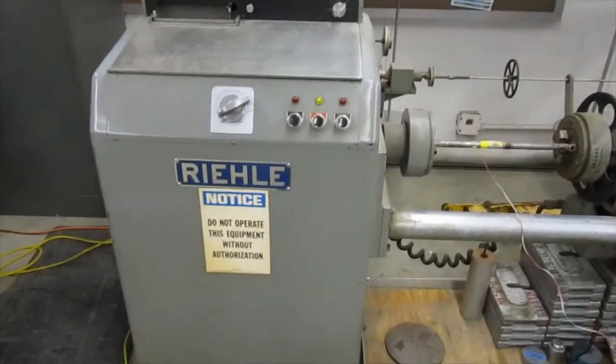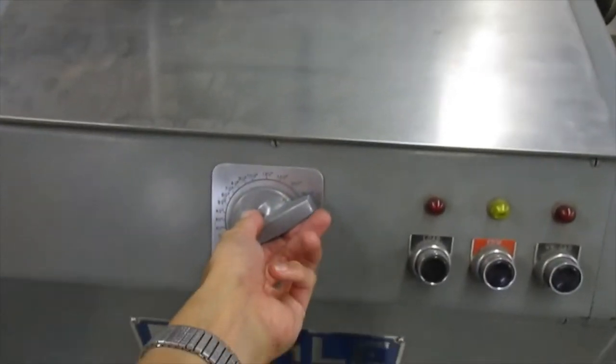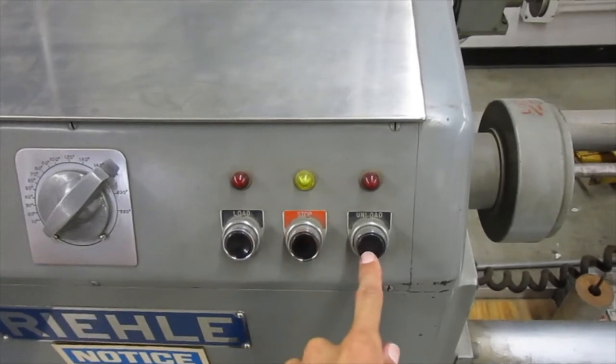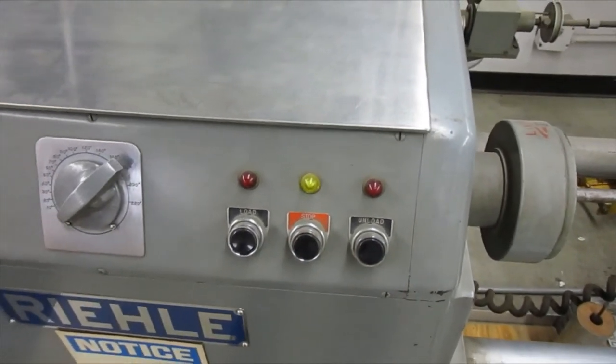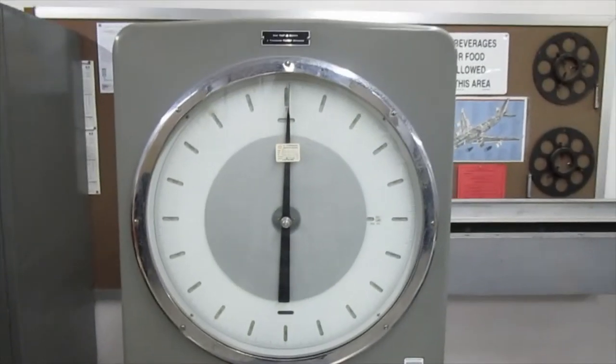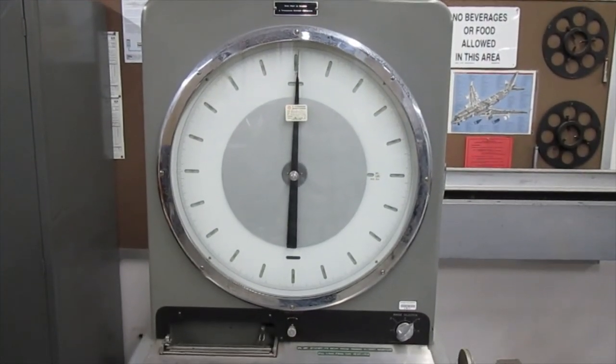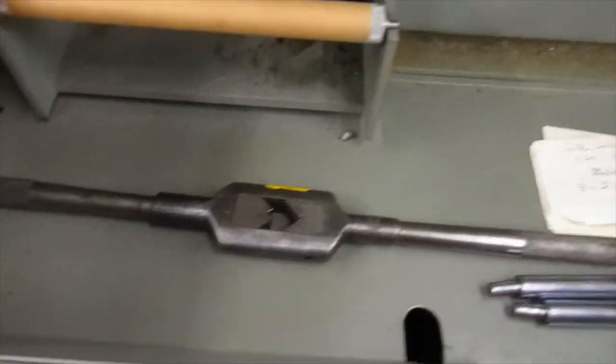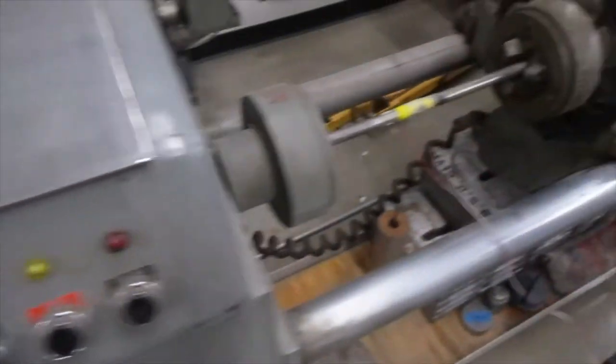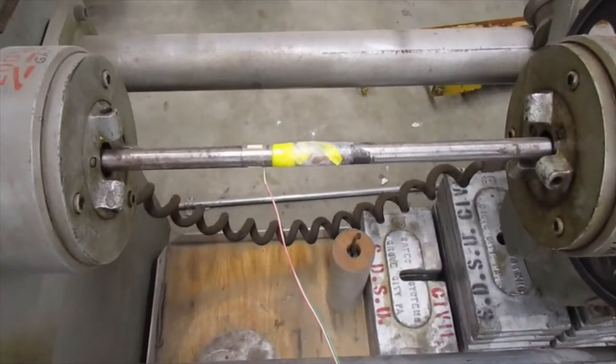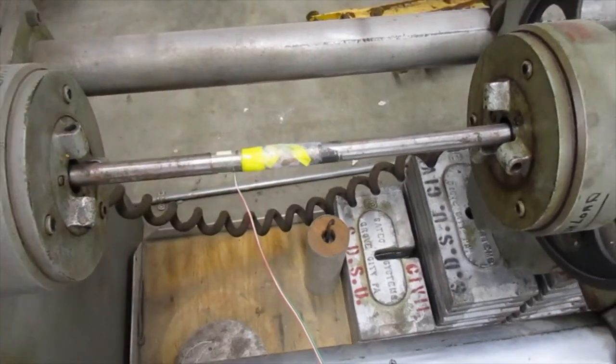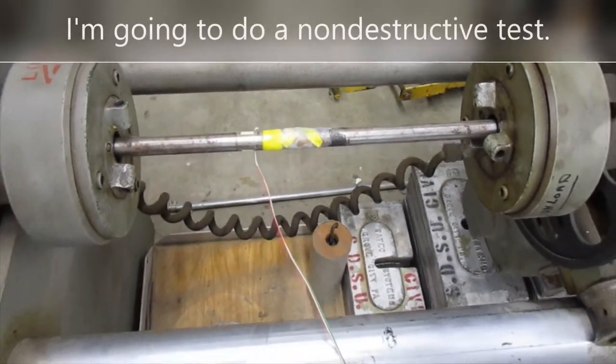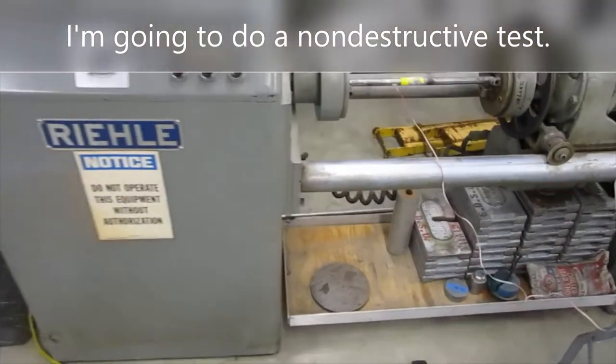The torsion testing machine. Here we have the loading dial. I turn that to apply load to the specimen. Stop button. If I want to load, I press the load button first. If I want to unload, I press stop and then I press the unload button. The loading gauge tells how much load is being applied to the specimen at any one time. In here we keep some wrenches we use to insert the specimen. So this is the specimen right here. You see the strain gauges glued on there.